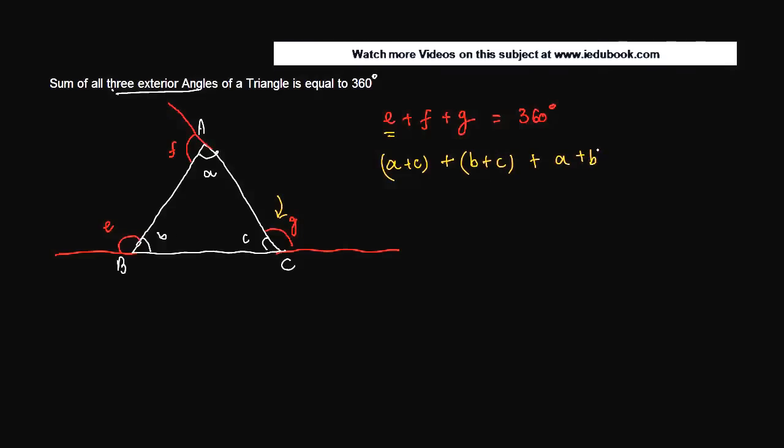Now if you add all of these, what do we get? We've got a here and another a here, so two a. Plus we've got b here and b here, two b. Plus we've got c here, two c. Or two times (a plus b plus c). Two is the common one so I've taken it out.